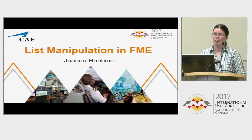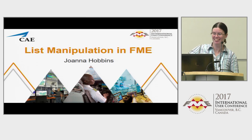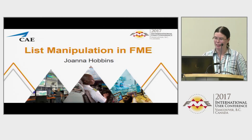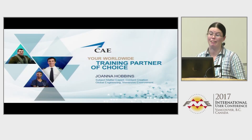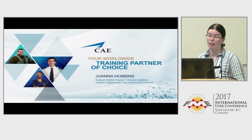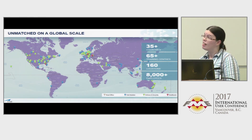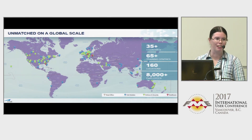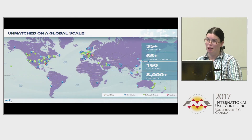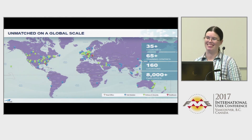Hi everybody. I'm Joanna Havins. I've been working at CAE for the last seven years, in the GIS field for 17, and almost 15 of those have been with FME. CAE is a global company located in 160 locations in 35 countries. We employ 8,500 people — we just hired another 500 in the last month for our 70th anniversary. Of those, there are five of us who use GIS and FME and we have to support the entire company and all of those locations. So no pressure.